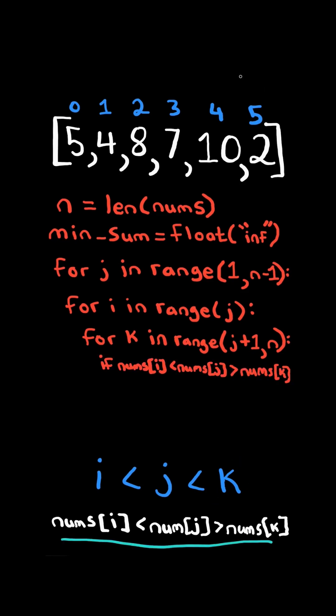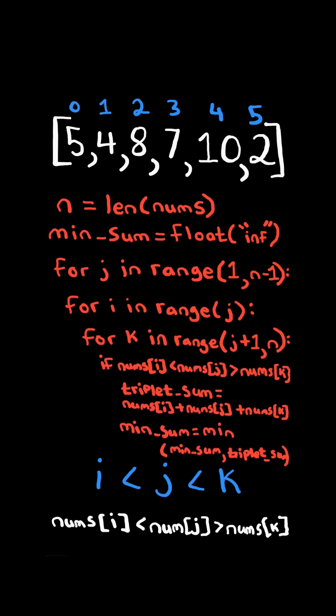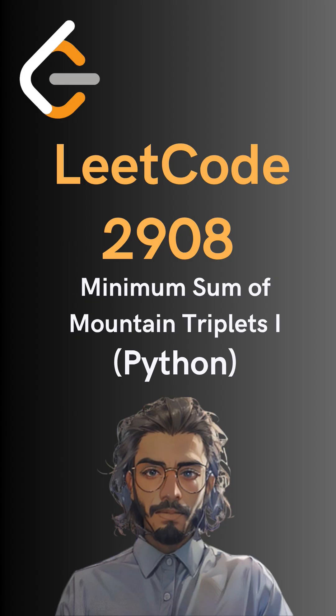And if the values at the index forms a mountain, we can calculate the triplet sum and update min sum. And here's the code to do so. If you'd like to follow for more.